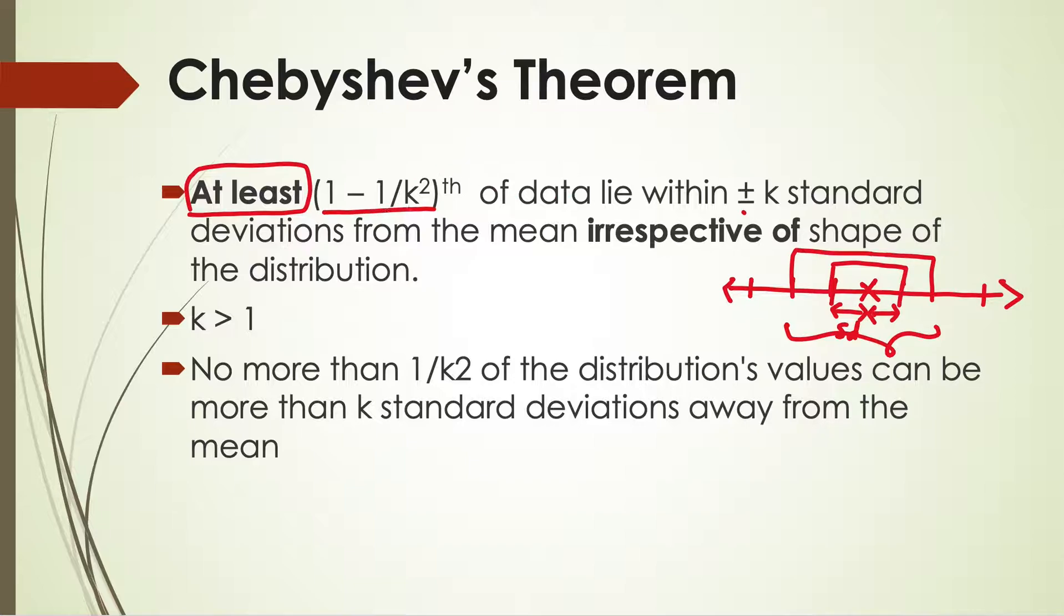At least 1 minus 1 by k squared of data will lie within plus minus k standard deviations from the mean, irrespective of the shape of distribution.